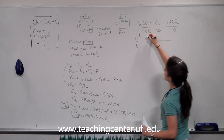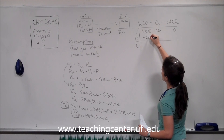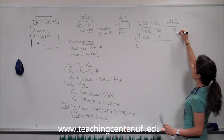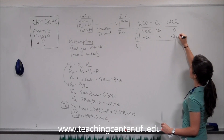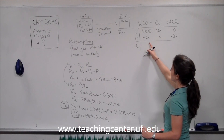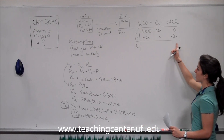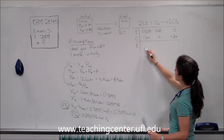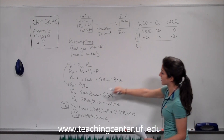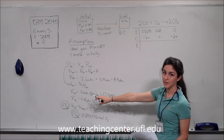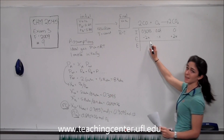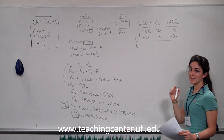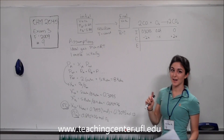The change row is minus 2x for carbon monoxide, minus x for oxygen, and plus 2x for CO2. To find how much we use of each component, we need to find x. Note that this x is different from the mole fraction x used earlier. To find the amount used of each reactant, we need to find the limiting reactant first.